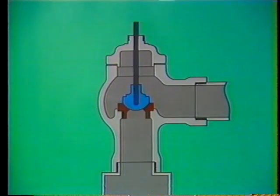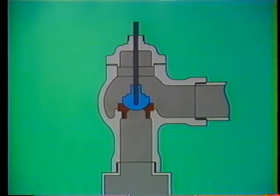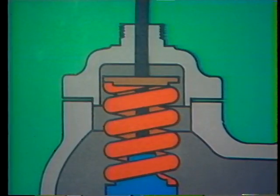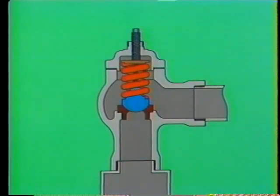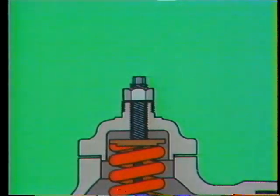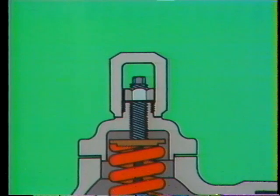Guiding the up-and-down motion of the disc is the spindle or stem. Often it is threaded so it can be screwed directly into the disc. To hold the disc in place against normal system pressure, a spring is used. A spring washer forms a flat surface on top of the spring to ensure even contact between the spring and the adjusting screw. The adjusting screw fits down over the end of the spindle and screws into the valve body. This screw exerts downward force on the washer and spring and can be used to adjust the tension of the spring. A lock nut holds the adjusting screw in position once it's been set, and a cap covers the top of the assembly, protecting the internal parts from dirt and damage.